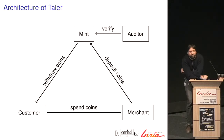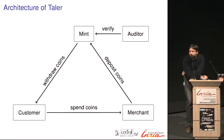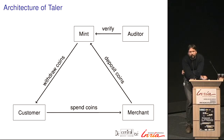Here's the basic architecture of Taler. We have what we call a mint — think of it like the mint that produces euro bills, or more like a bank. The mint allows the customer to withdraw electronic coins. The withdrawal process uses what is cryptographically called blind signatures — a variant of a Chaumian currency. The customer convinces the mint they've paid in money, say 50 euros via SEPA, and then withdraws 50 euros worth of digital coins. The key thing with blind signatures is the mint does not know the identity of the coins being generated.